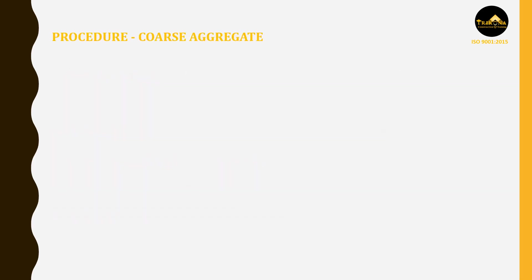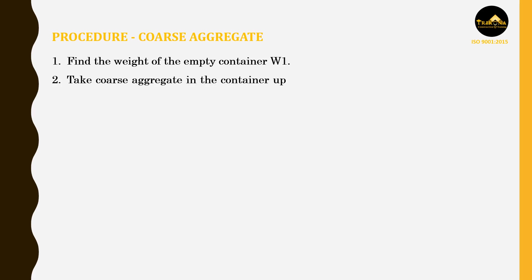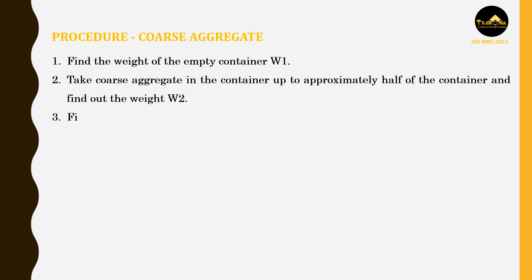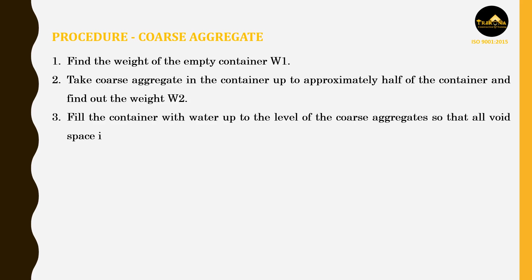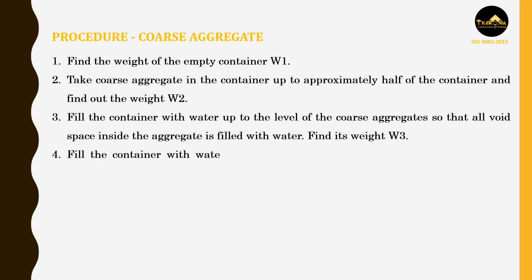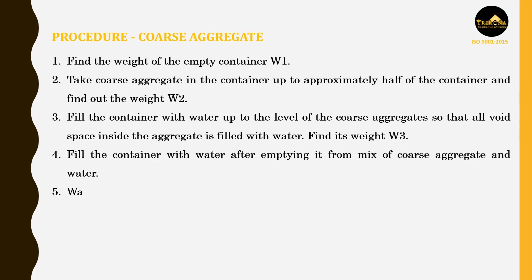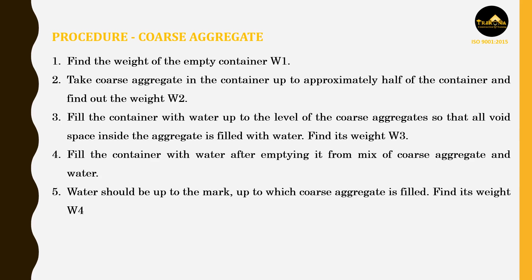Procedure — Coarse aggregate: Find the weight of the empty container, W1. Take coarse aggregate in the container up to approximately half of the container and find out the weight, W2. Fill the container with water up to the level of the coarse aggregates so that all void space inside the aggregate is filled with water. Find its weight, W3. Fill the container with water after emptying it from the mix of coarse aggregate and water. Water should be up to the mark up to which coarse aggregate is filled. Find its weight, W4.